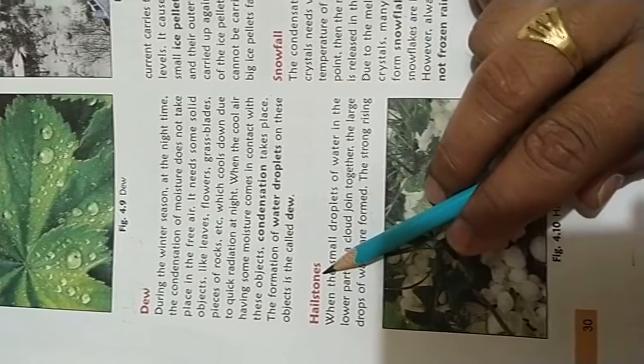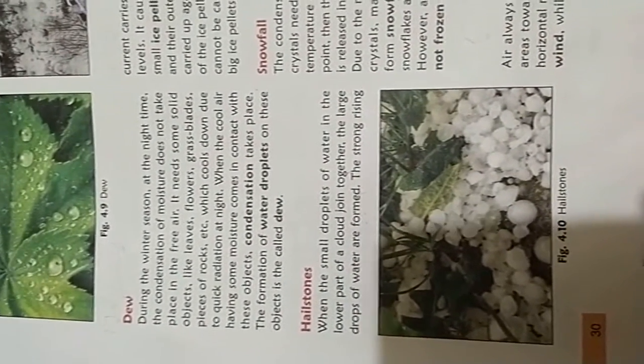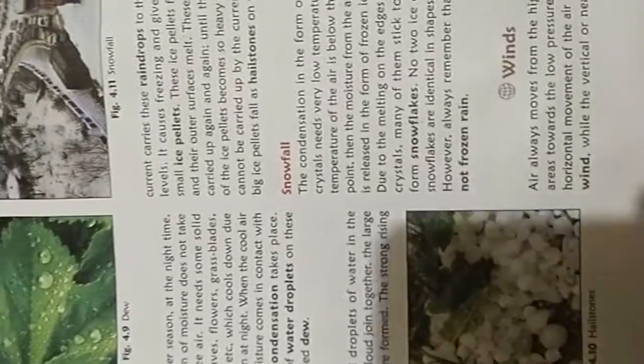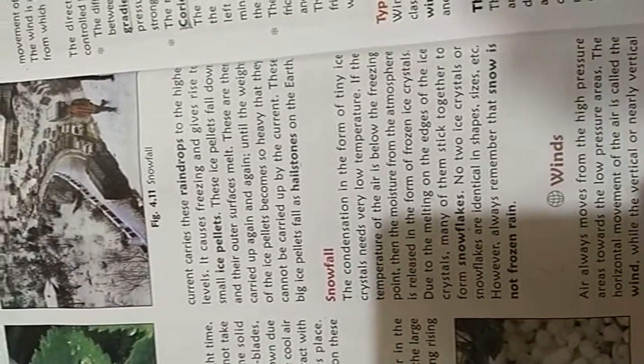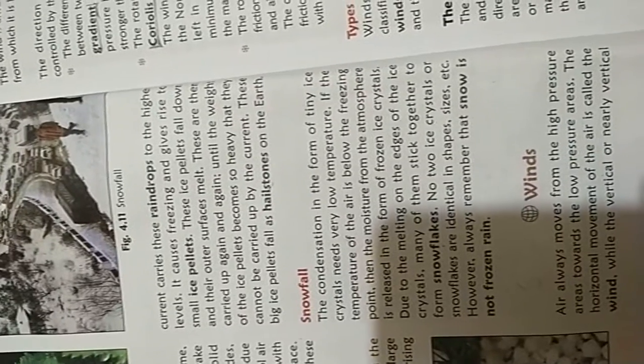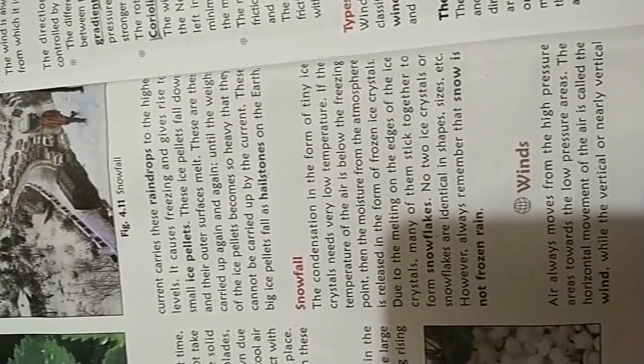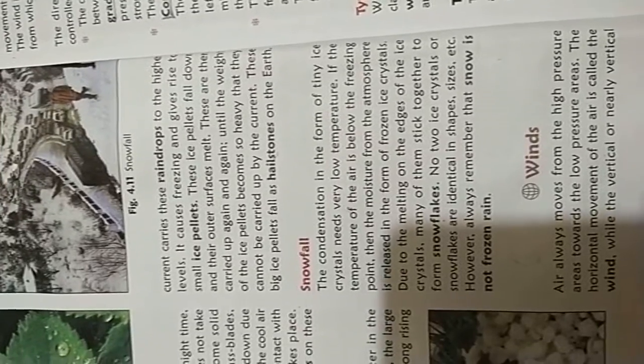So next is hailstones. When the small droplets of water in the lower part of the cloud join together, large drops of water are formed. Then strong wind currents carry these raindrops up to a higher level, where they freeze and form small ice pellets.